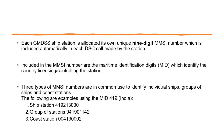Number 1 — Ship stations. For example: 419-213-000. Number 2 — Group of stations. For example: 0419-01142. Number 3 — Coast stations. For example: 00419-01142.